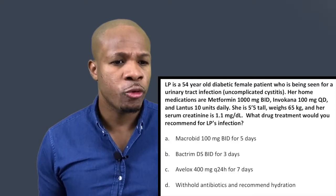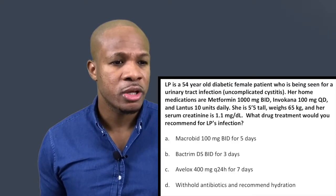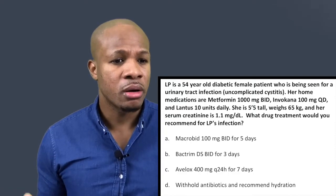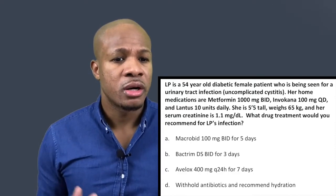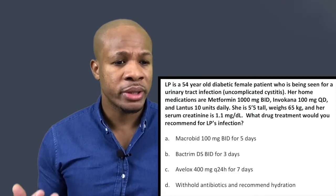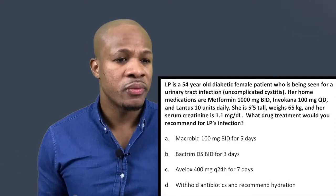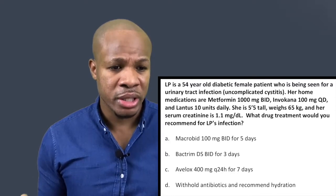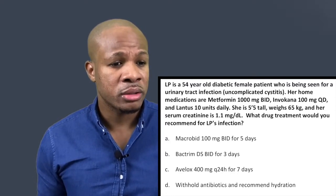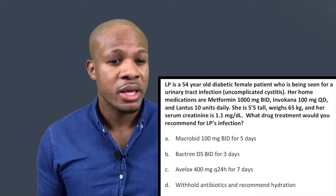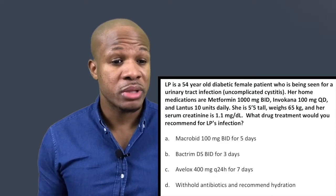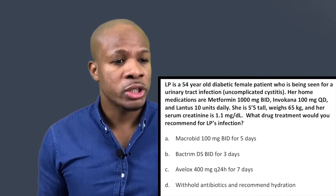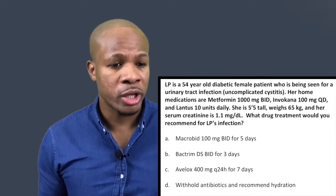LP is a 54-year-old diabetic female patient who is being seen for a urinary tract infection, uncomplicated cystitis. Her home medications are metformin 1000 milligrams twice a day, Invokana 100 milligrams once a day, and Lantus 10 units daily. She is 5 feet tall, weighs 65 kilograms, and her serum creatinine is 1.1 milligrams per deciliter. What drug treatment would you recommend for LP's infection?